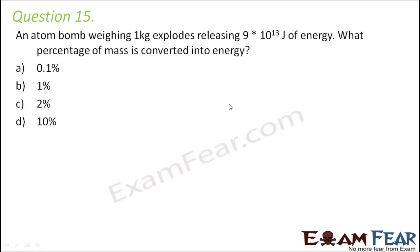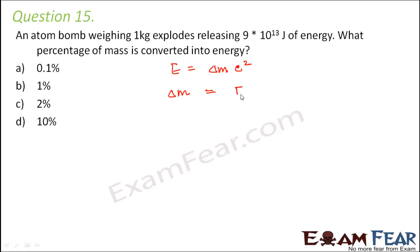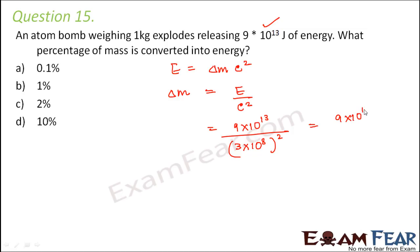Question number 15. An atom bomb weighing 1 kg explodes releasing 9×10¹³ joules of energy. What percentage of mass is converted into energy? Whenever we talk about conversion of mass and energy, Einstein's mass-energy relation applies: E equals delta-M times C squared. So mass defect equals E divided by C squared, which is 9×10¹³ divided by (3×10⁸)², equal to 9×10¹³ divided by 9×10¹⁶, giving 10⁻³ kg.